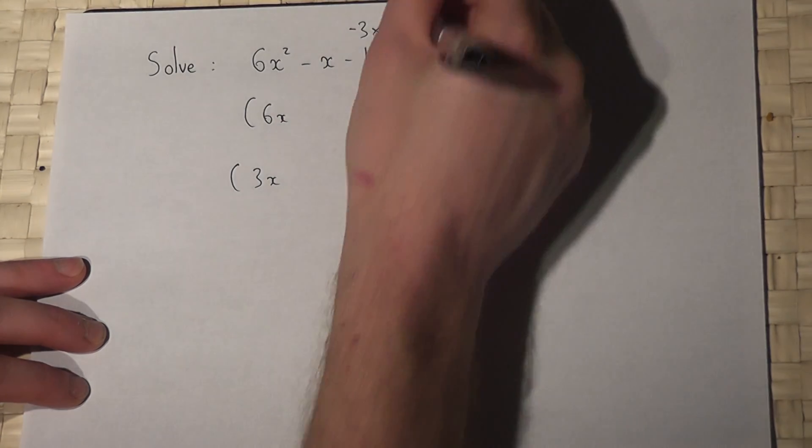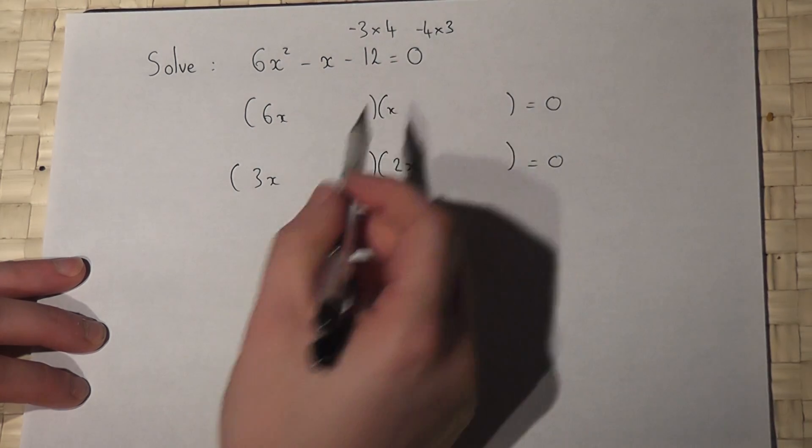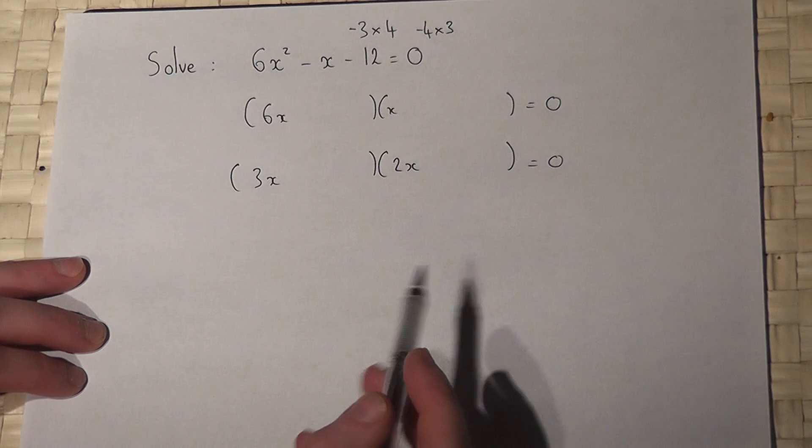Or it could be 6 and 2, or 1 and 12, but we'll try these two out first.